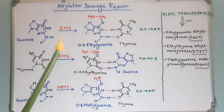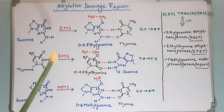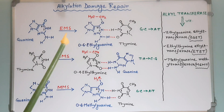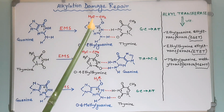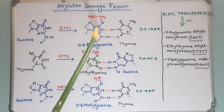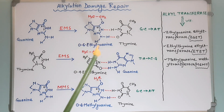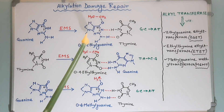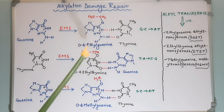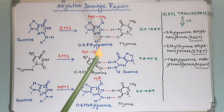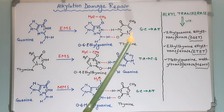Here you can see a few examples. In the first diagram, EMS adds an ethyl group to the oxygen at position 6 of guanine to create O6-ethylguanine. This O6-ethylguanine pairs with thymine instead of cytosine.